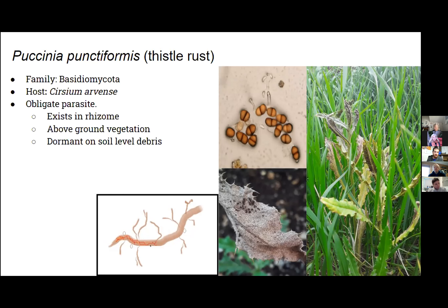We know that the best way to manage Canada thistle is through integrated weed management approaches. I'm looking into the potential for the use of Puccinia punctiformis — we call it thistle rust — as a biological control for Canada thistle. Thistle rust is a fungal pathogen that exists in the rhizome and in the above-ground vegetation of Canada thistle.